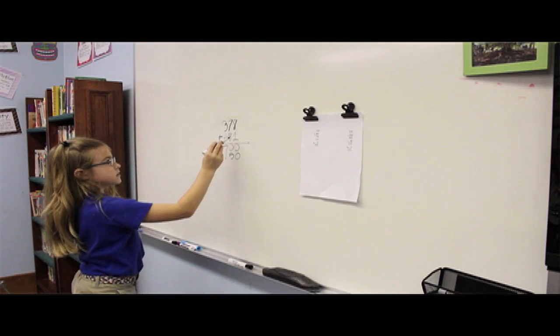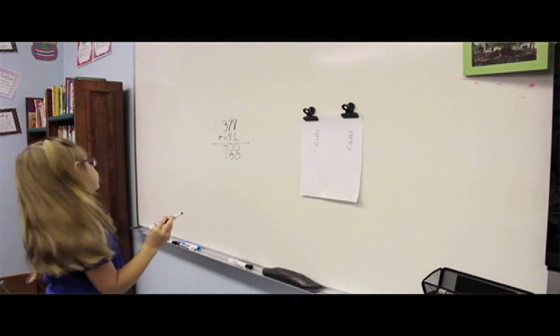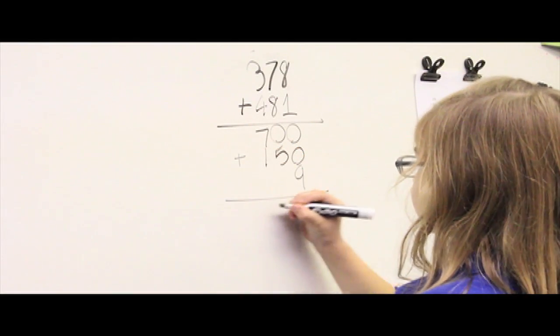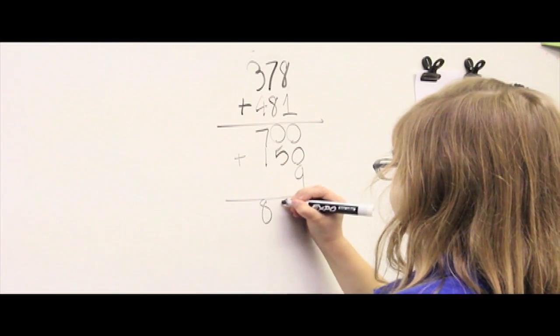8 ones plus 1 one equals 9 ones, value 9, mental math, 859.